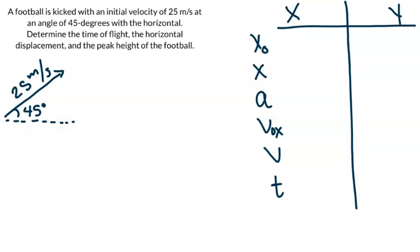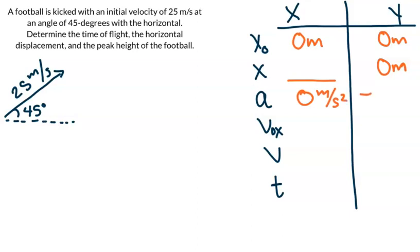We can go ahead and put in all the information that we know. Our initial x position is going to be zero meters, same thing with our initial y position. We don't know anything about our final x position, but we do know that our final y position is going to be zero meters as well because we are starting and ending on the ground. Our acceleration in the x direction is zero meters per second squared, and in the y direction negative 9.8 meters per second squared — our acceleration due to gravity.